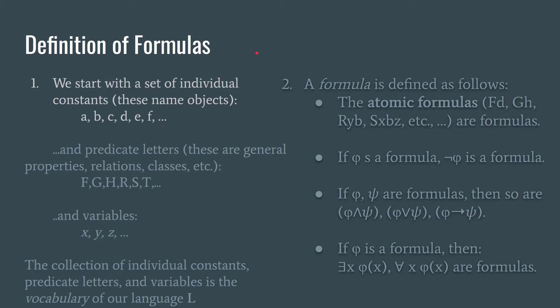Now is the time to introduce our official definition of the syntax for predicate logic. This is where we define what formulas and combinations of formulas are permissible according to our formulation rules. The basic ingredients of all the formulas of predicate logic include a set of individual constants. These constants name objects. So they're constant rather than variable. We then have a class of predicate letters. These are general properties. Rather than naming objects, they name properties, relations, or classes of objects. Finally, we have our variables. And this collection of individual constants, predicate letters, and variables is the vocabulary. Again, the ingredients out of which we can build any of the infinite number of formulas of predicate logic.